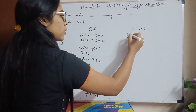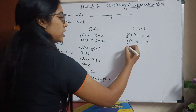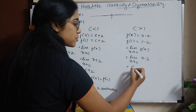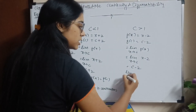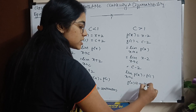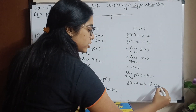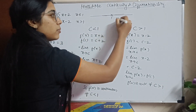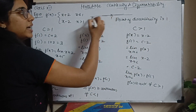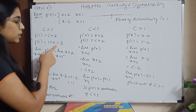For c > 1: the only condition is x - 2, so f(c) = c - 2. The limit as x tends to c of f(x) = limit of x - 2 = c - 2 = f(c). So f(x) is continuous for all values where c > 1. Therefore, the only point of discontinuity is x = 1, because the left hand limit is not equal to the right hand limit there, even though the left hand limit equals f(c).